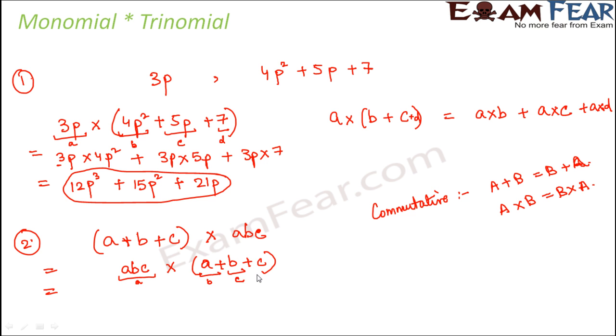So this becomes a²bc + ab²c + abc². So this is the product.